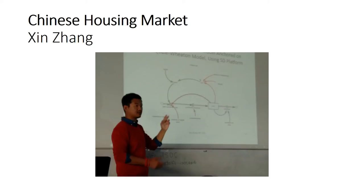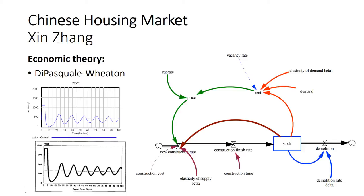I'll start with a presentation by Xin Zhang from MIT, who talked about the Chinese housing market. He took an existing economic theory by Deepa Scarl-Breathen and translated it into a System Dynamics model, shown on the right. On the left you see two graphs that are really similar, showing he can represent the behavior of the existing theory, and then he started expanding the model.